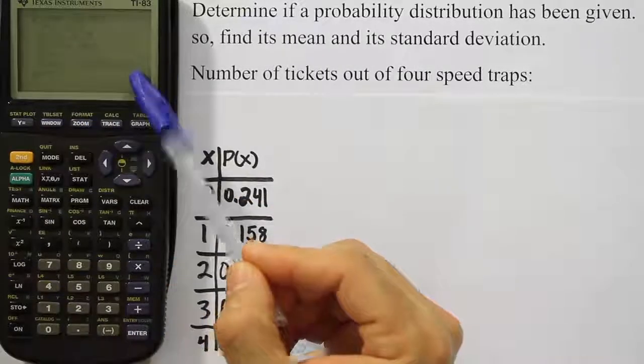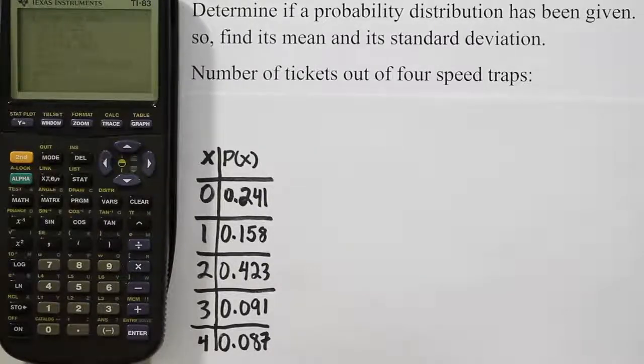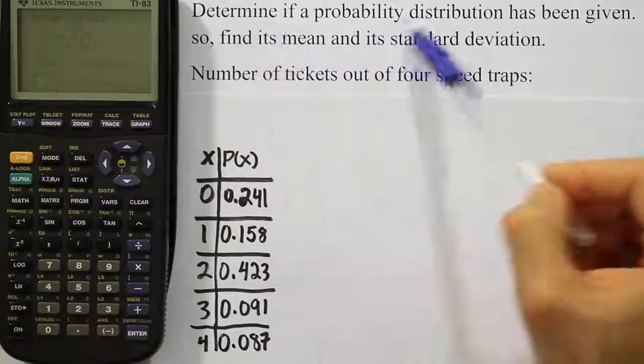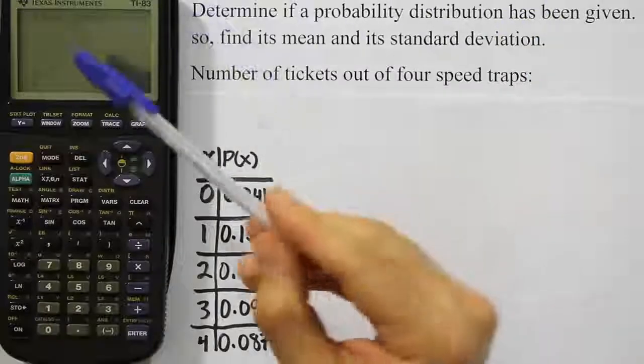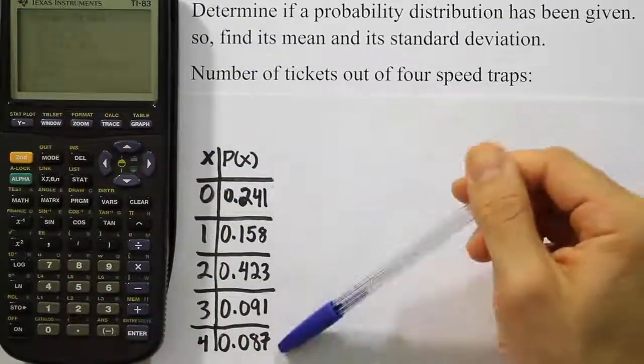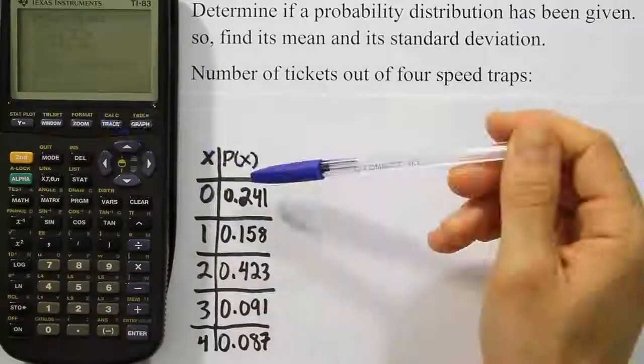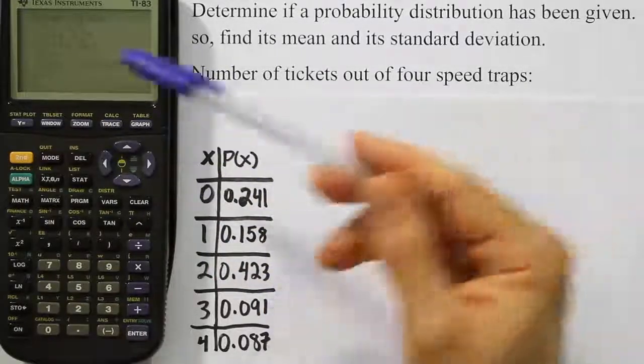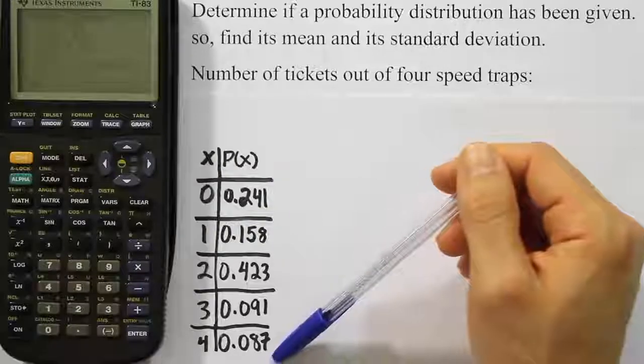Notice it gives you population standard deviation because it recognizes that this is in fact a probability distribution. And the way it knows that is that it uses n to total up these probabilities. So actually our n here is going to give us the sum of this column. If that n is 1, then we know it's a probability distribution.